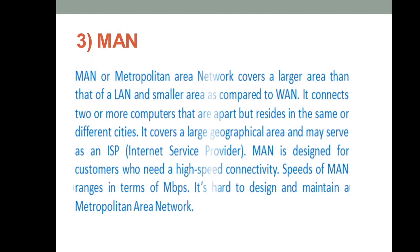The next type of network is MAN, Metropolitan Area Network. It covers a larger area than LAN — while LAN is limited to one building, office, school, or university, MAN is larger than LAN but smaller than WAN. It connects two or more computers that are apart but reside in the same or different cities, covering a large geographical area. It may also serve as an ISP, an Internet Service Provider. MAN is designed for customers who need high-speed connectivity, and its speeds range in terms of Mbps. It is hard to design and maintain, so we generally prefer WAN. That is it about the types of computer networks. Thank you everyone.